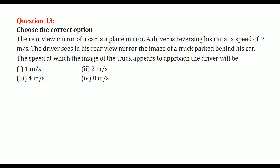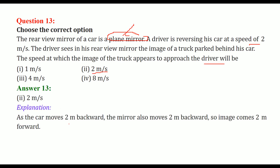Choose the correct option: The rear view mirror of a car is a plane mirror. The driver is reversing his car at a speed of 2 meters per second. The driver sees in his rear view mirror the image of a truck behind his car. The speed at which the image of the truck appears to approach the driver is 2 meters per second, because as the car moves 2 meters backwards, the mirror also moves 2 meters backwards, so the image comes 2 meters forward. These are a few questions and answers on Light. Thank you so much, take care of yourself.